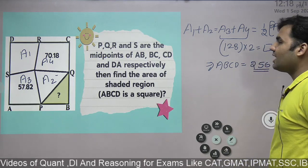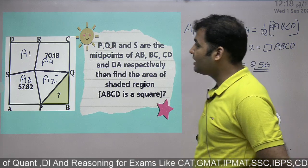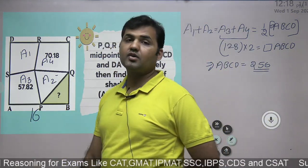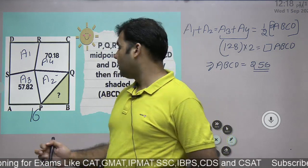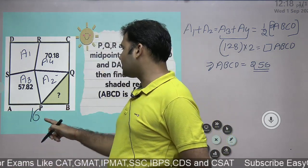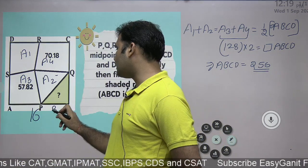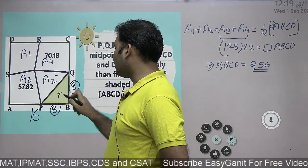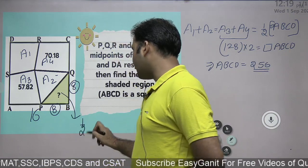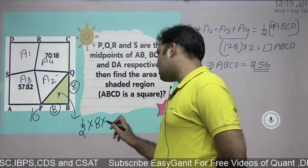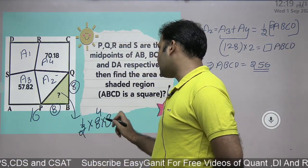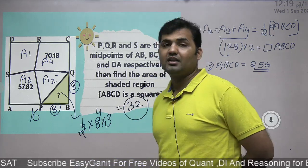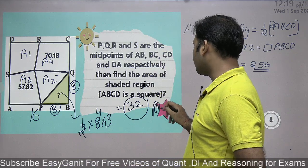This whole square area is 256, which means the side length will be 16 because the area of a square is side squared. Now this whole length is 16. Since P, Q, R, S are midpoints, this length will be 8 and this length will be 8. So the area of the shaded region would be half into 8 into 8, which equals 32. That is the correct answer to the question.